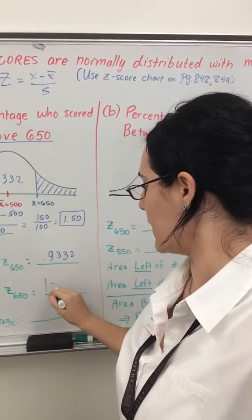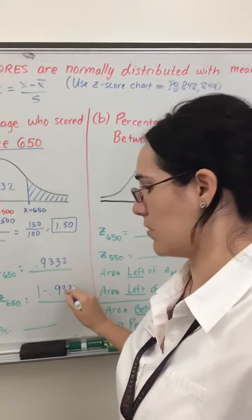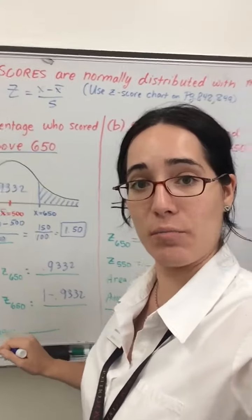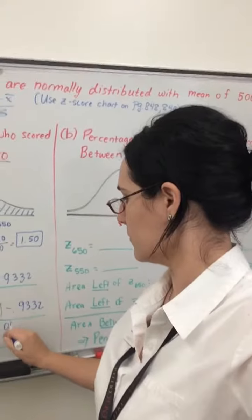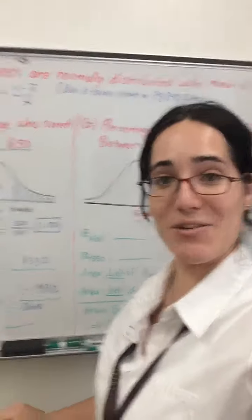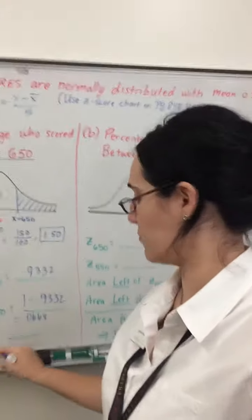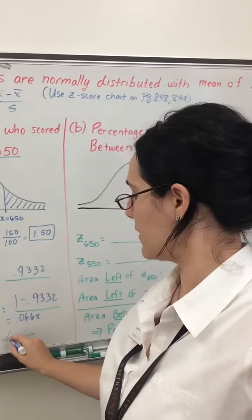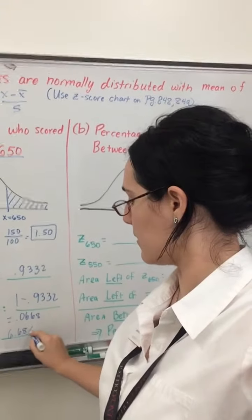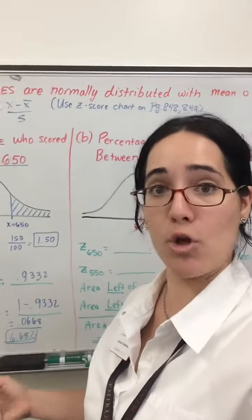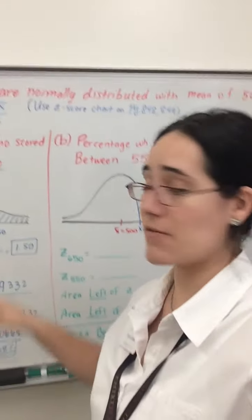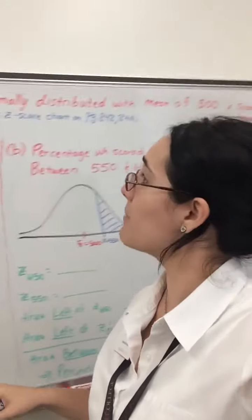So we need 1 minus .9332, which gives us our answer of .0668. And we're asked to write our area as a percentage here. So moving our decimal 2 to the right, we'd have 6.68%. That's the probability that you randomly pick someone who scored above a 650 on the SAT, in the math section.